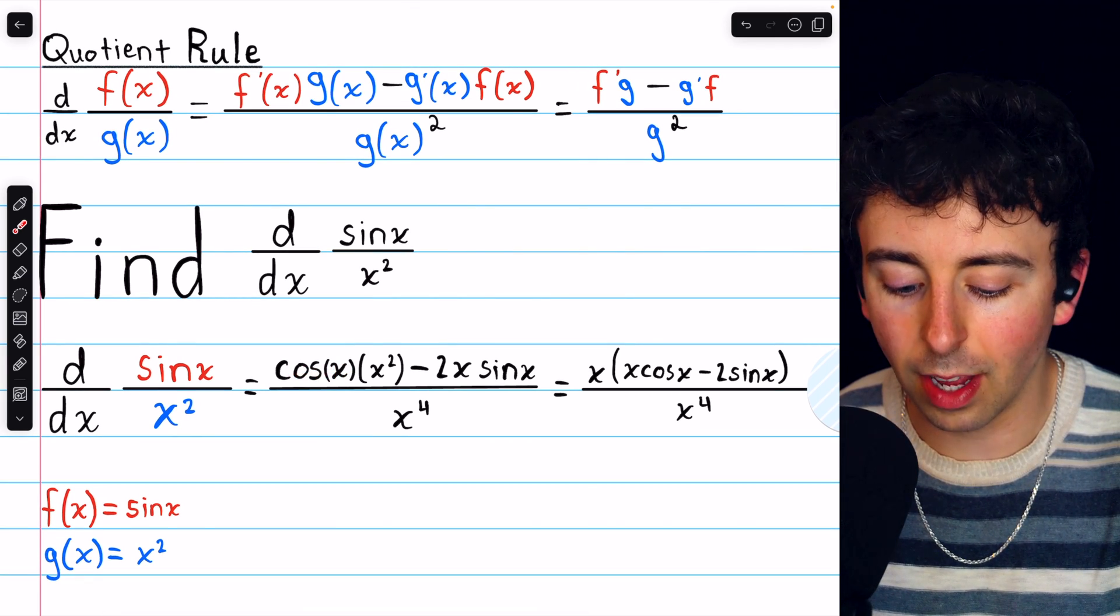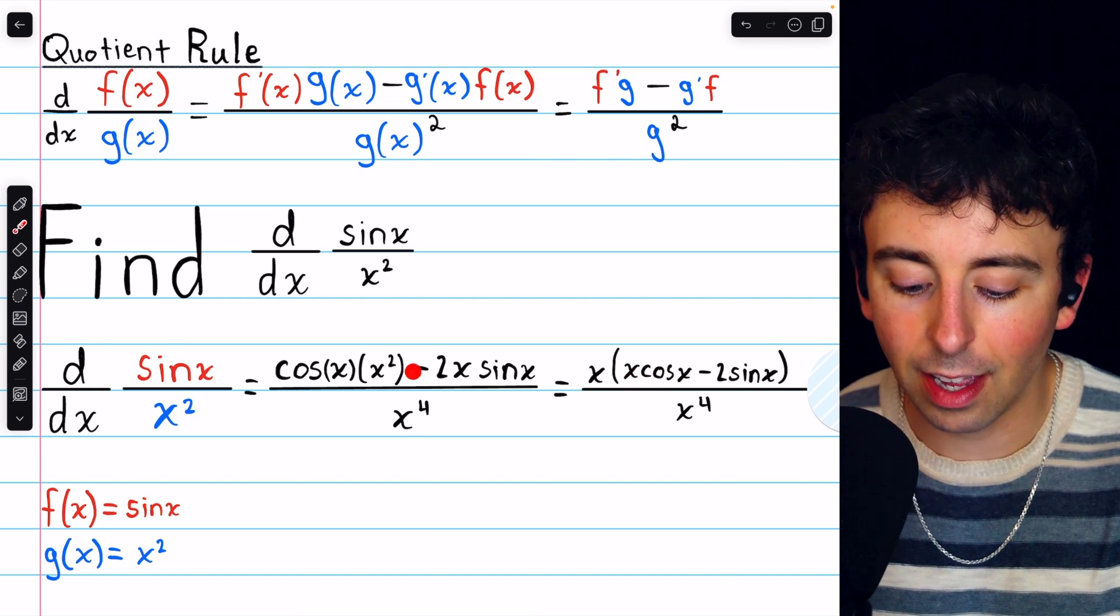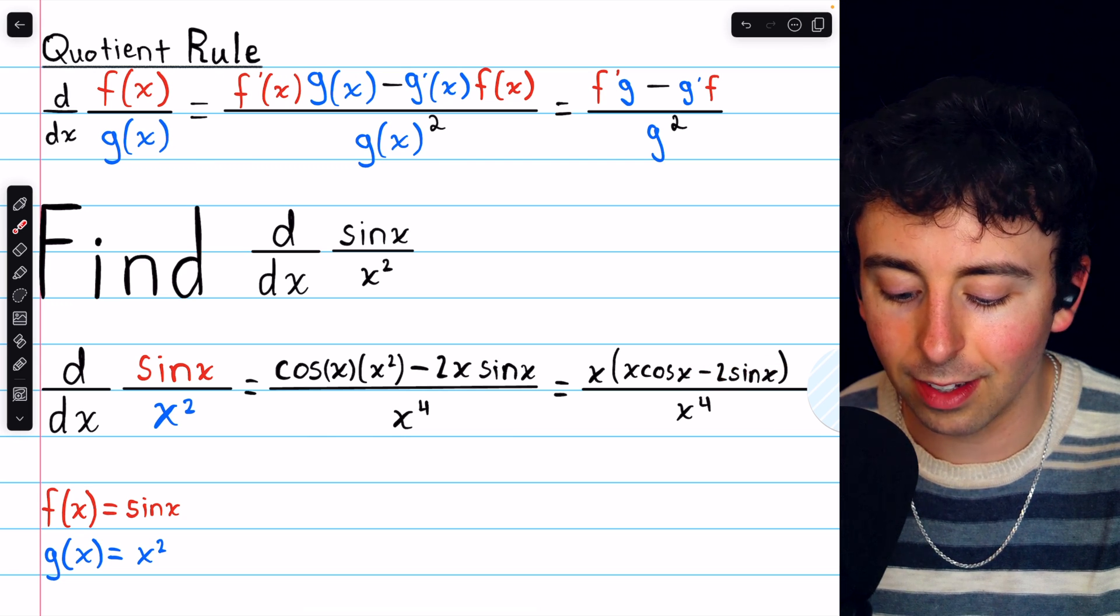Taking the x out of cosine x times x squared leaves us with cosine x times x. Taking the x out of minus 2x sine x leaves us with minus 2 sine x.